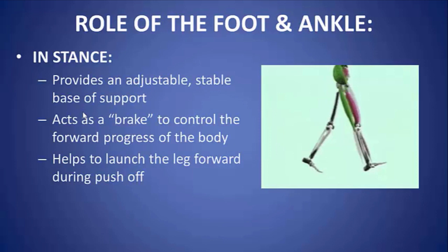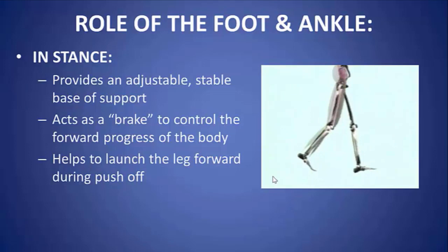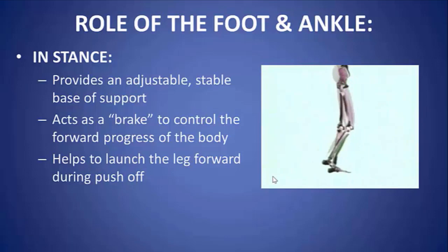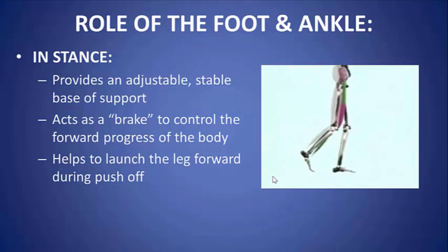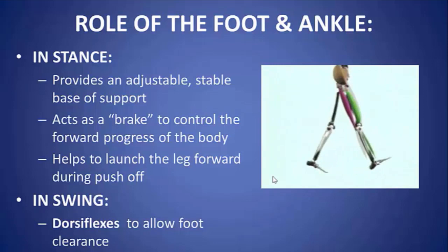The foot and ankle is a little more complicated. The foot in stance provides an adjustable stable base of support and also acts as a brake to control the forward progress of the body in stance phase. This eccentric activity of the gastrocsoleus during stance phase is very important — it keeps the foot from dorsiflexing excessively. Then at the end of stance, the gastrocsoleus switches from eccentric to concentric as there is plantar flexion to launch the leg forward during push-off. In swing, the dorsiflexors work to keep the foot dorsiflexed and allow for foot clearance from the surface.